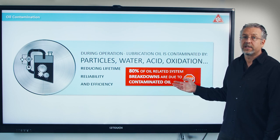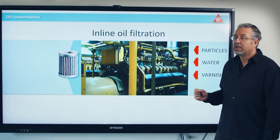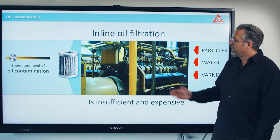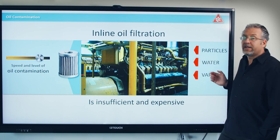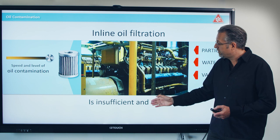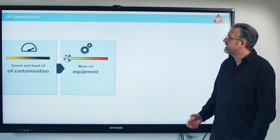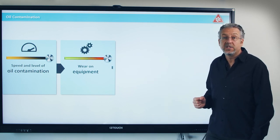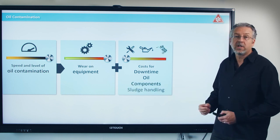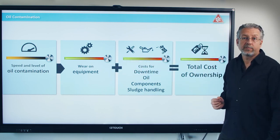So there's a lot of hidden savings here. Most machines do have an inline filter already on the oil system, but they are normally quite insufficient, so the contamination level is increasing over time. They are also only focusing on particles, so water and varnish may still be an issue. If you have a very good quality inline filter, you may be okay in cleanliness, but it will be very expensive to run it. So when your contamination level is increasing, you will have wear on the machine, spend more money on oil, downtime, different components you need to replace, and the oil itself and slush handling. There's a direct correlation between dirty oil and the cost of running that machine, or cost of ownership.